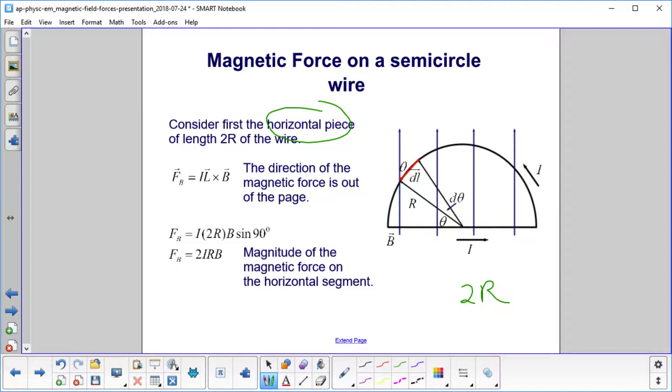So the magnetic force is I L cross B. You use the right-hand rule, and you find that the magnetic force is out of the page. You put your four fingers in the direction of the current. You face your palm up, and you curl your fingers in that direction. You stick your thumb out, it's coming out of the page.